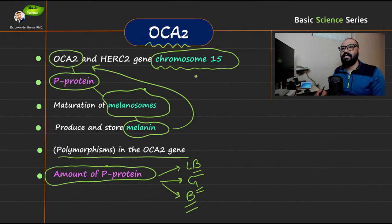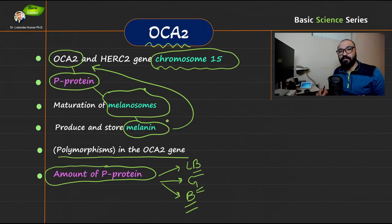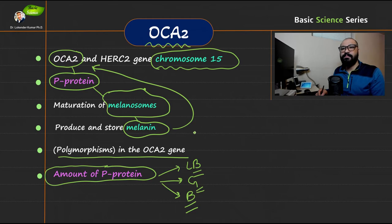As you can see, the main point is that the OCA2 gene synthesizes p-protein, and that p-protein is important for the maturation of melanosomes. Melanosomes store the melanin pigment.